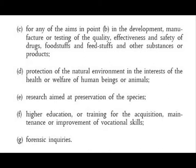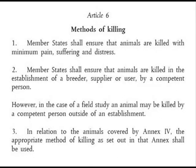D: protection of the natural environment in the interests of the health or welfare of human beings or animals. E: research aimed at preservation of the species. F: higher education or training for the acquisition, maintenance or improvement of vocational animal skills. And finally, G: for forensic inquiries. Now we're on to Article 6, methods of killing. Part one reads: member states shall ensure that animals are killed with minimum pain, suffering and distress.